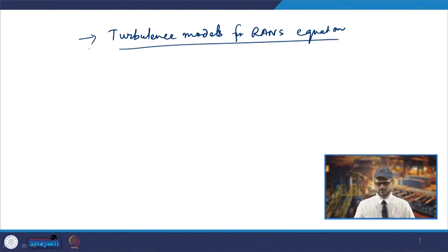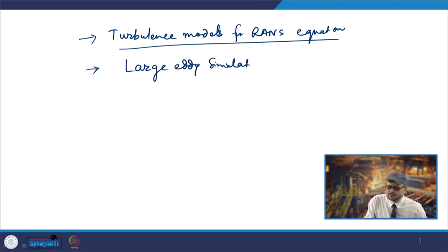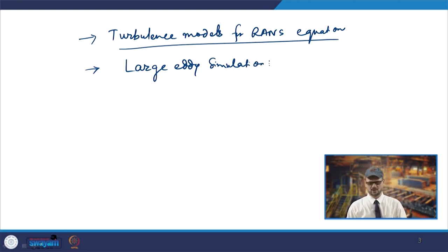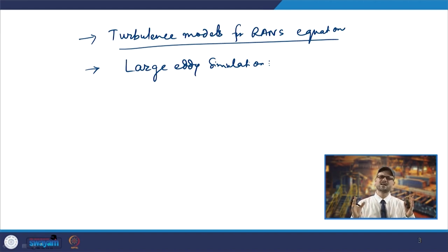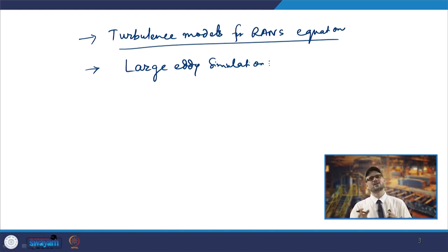The second category is Large Eddy Simulation (LES). This is an intermediate form of turbulence calculation. Here you track the behavior of the larger eddies while the smaller eddies are filtered out, using subgrid scale modeling for them. You calculate based on the larger eddies and filter the smaller ones.